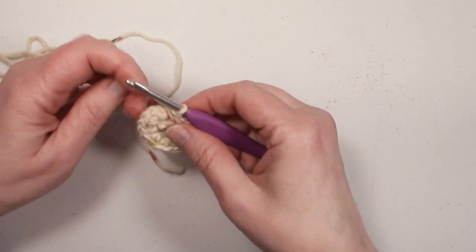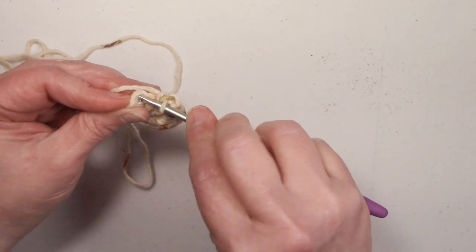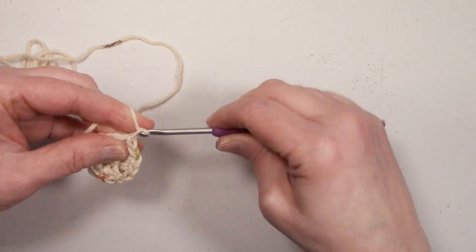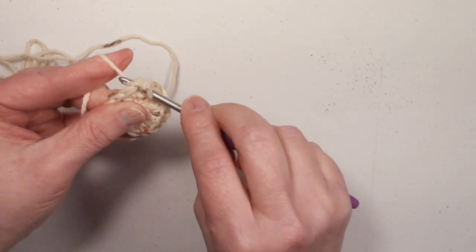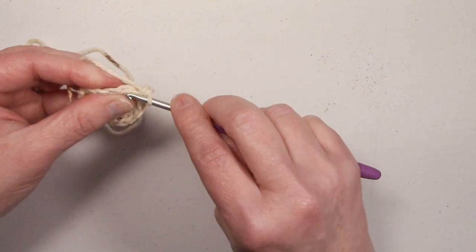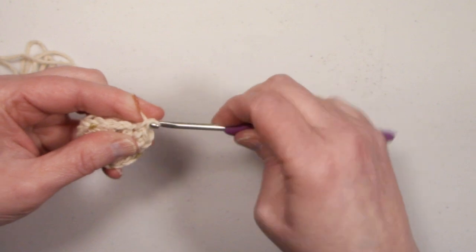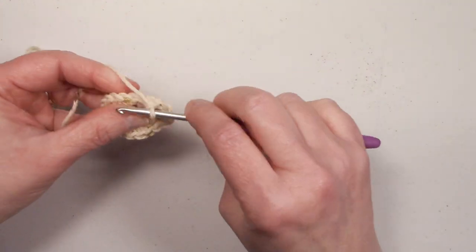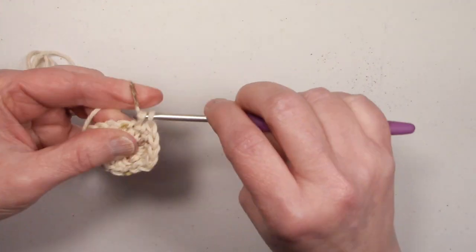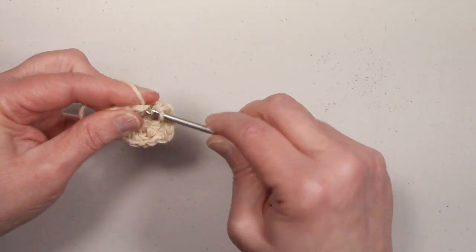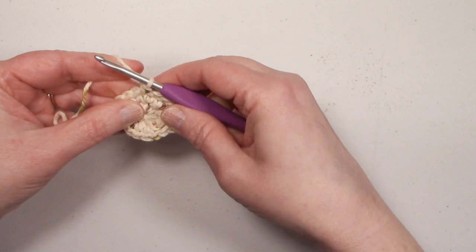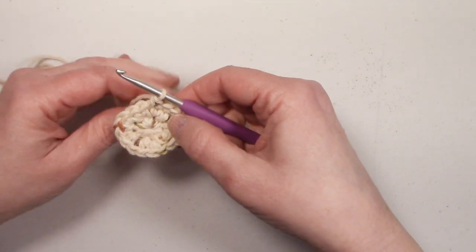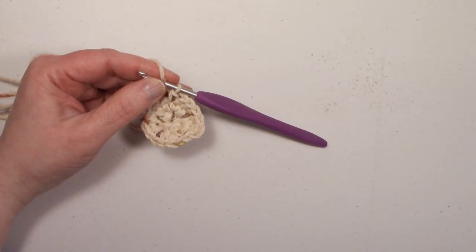I'm at the end of round two. We have sixteen stitches, and we need to slip stitch into the first single crochet that we made. Chain one, and we're going to single crochet into each stitch around. You're going to come back to the beginning, and slip stitch into that first single crochet. And I'll meet you back up at the end of this round.